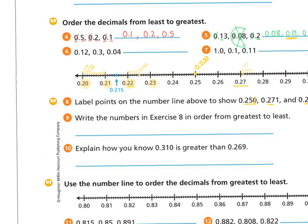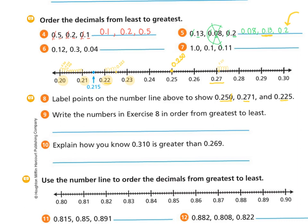Now that I've clearly written those on my number line, it's pretty simple to order them. This time they want greatest to least — that means biggest to smallest. They're trying to trick you to make sure you're reading. My biggest number was zero and 271 thousandths, then zero and 250 thousandths, and finally zero and 225 thousandths.